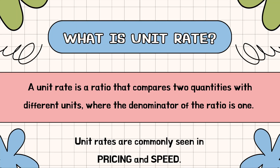A unit rate is a ratio that compares two quantities with different units, where the denominator of the ratio is one. Whenever I say the word unit, I want you to think of the number one. Unit rates are commonly seen in pricing and speed.